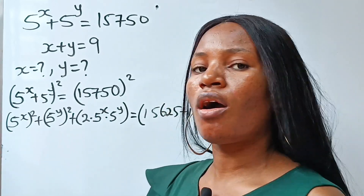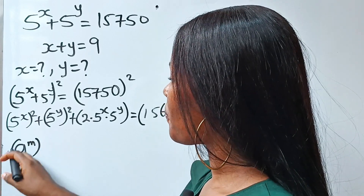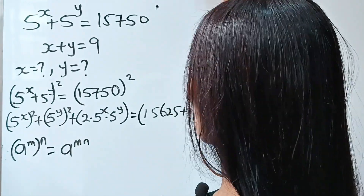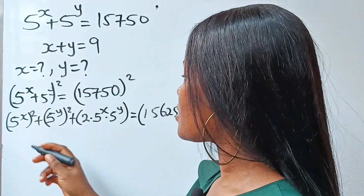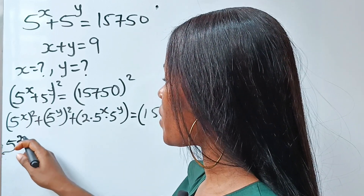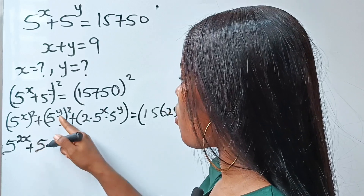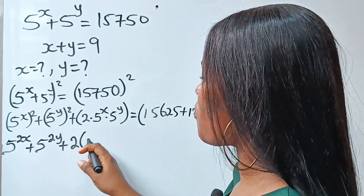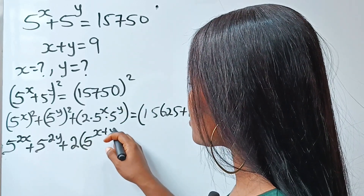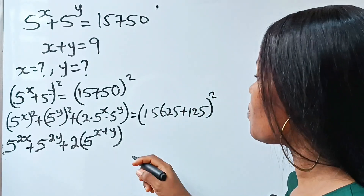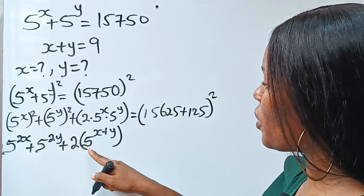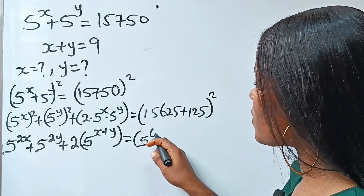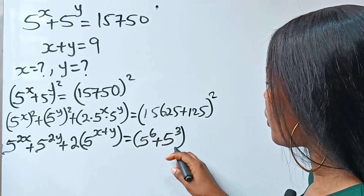Using our law of exponents, the law states that a to the power of m raised to the power of n is equal to a to the power of m times n. So we can write 5^(x·2) which gives 2x, plus 5^(y·2) which is 2y. And for 5^x multiplied by 5^y, since they have the same base, we pick one base and add the powers. Now 15625 is 5 to the power of 6, and 125 is 5 to the power of 3, squared.